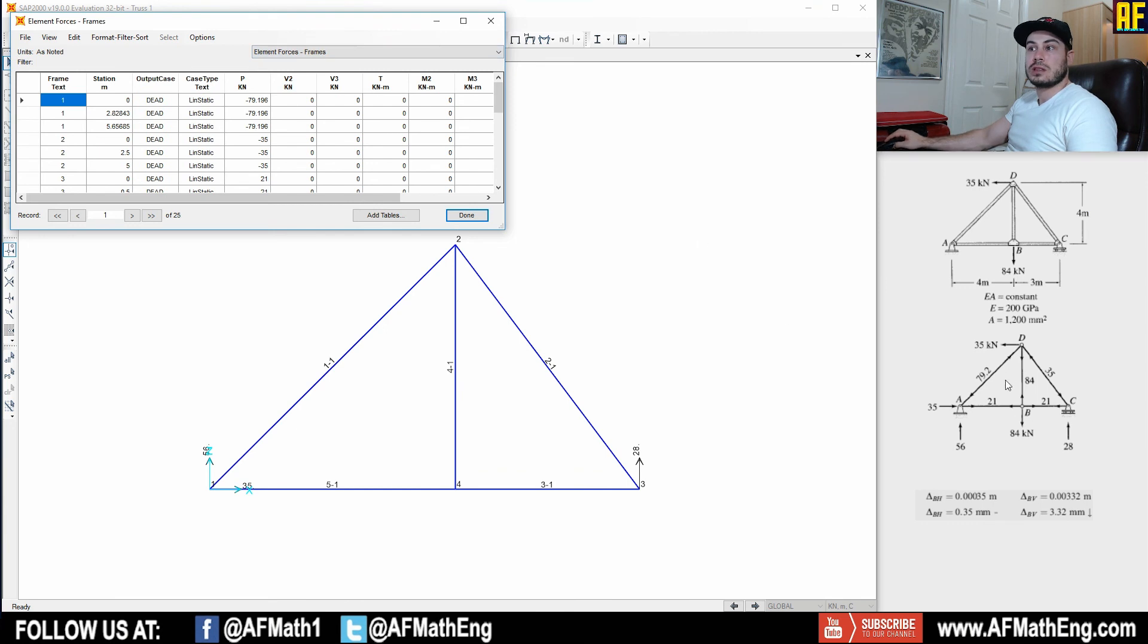Let's go ahead and take a look at the element forces. And as you'll see, so frame number one, we have a compression of 79.196, 79.2 they rounded it here. And you know, 35 compression. So that's all good. So we have 79.2, 79.2, 35, 35. We have 21 here. That is number three, 21. Cool.